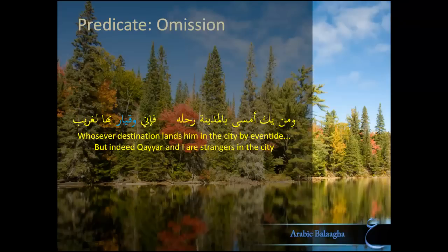The poet is expressing sorrow over being a stranger in the city where everyone seems to be at home. Notice the grammatical structure in the second couplet: we have inna, the ism of inna which is the ya, and the khabar of inna which is biha la-ghariibu. So here we have a full sentence with a mentioned subject and a mentioned predicate.